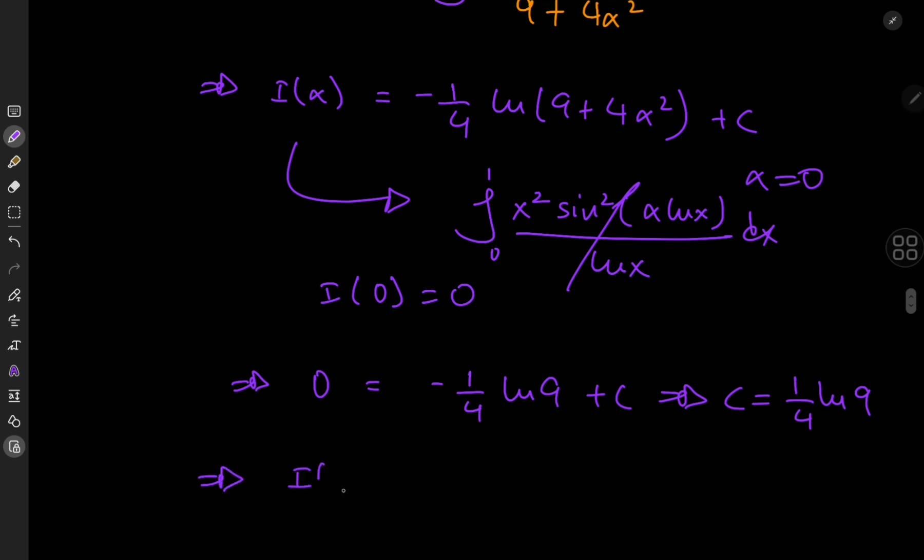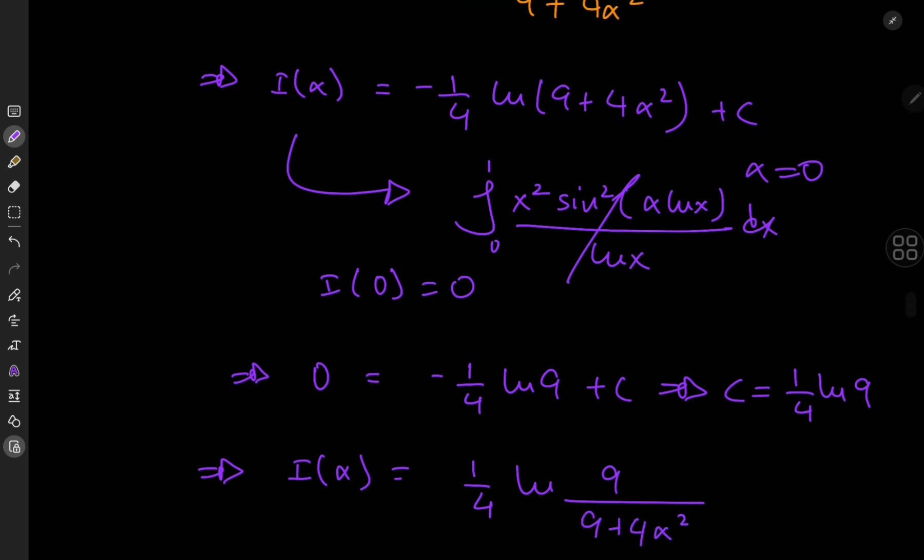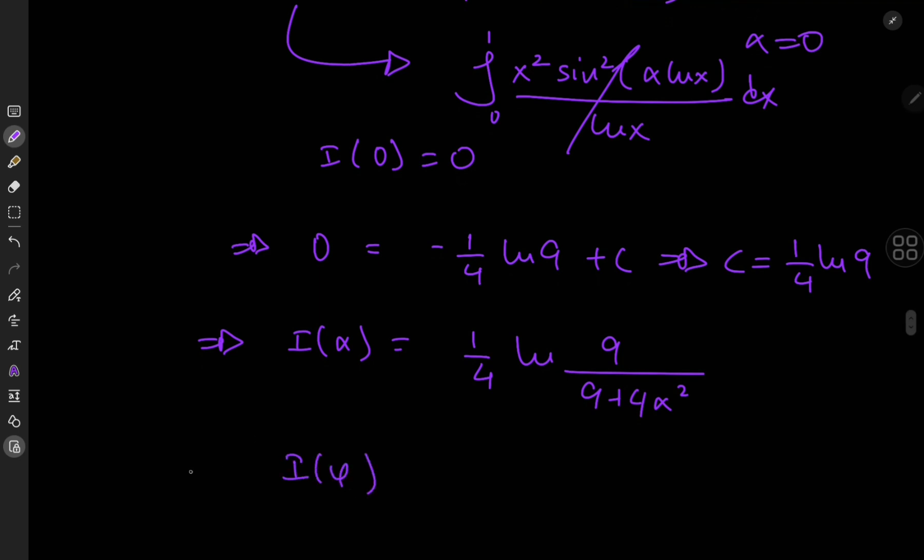So this implies that i of alpha is negative 1 quarter times log 9, or I can just write this as a combined logarithm factoring out the 1 quarter term log 9 in the numerator and in the denominator, I have 9 plus 4 alpha squared. And we're interested in i of phi, right? That was our target. So that means we have a quarter of log 9 divided by 9 plus 4 phi squared. That is in terms of the golden ratio.